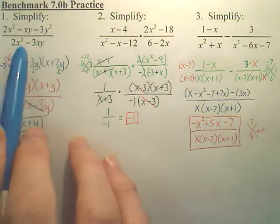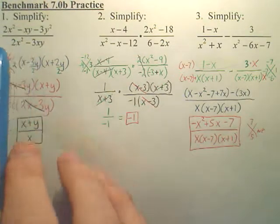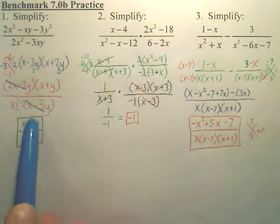Okay, and the bottom, you can pull an x out. See the x? When you pull an x out, you're left with 2x minus 3y on the bottom. These cancel, leaving you this as an answer.